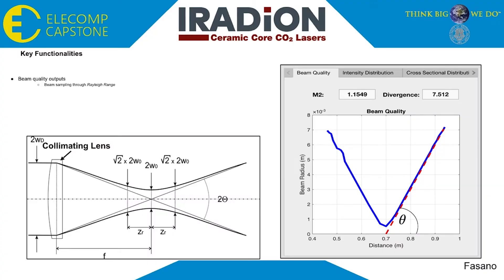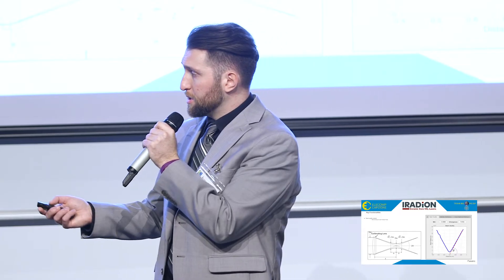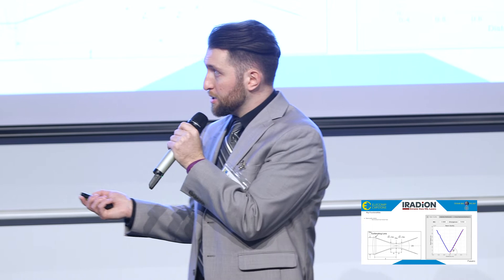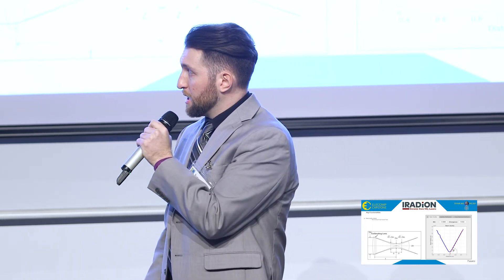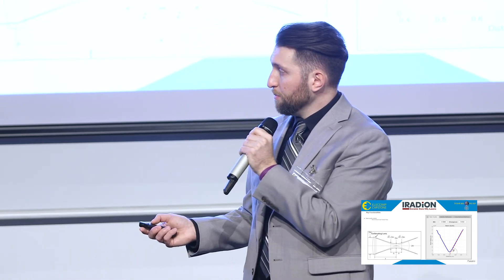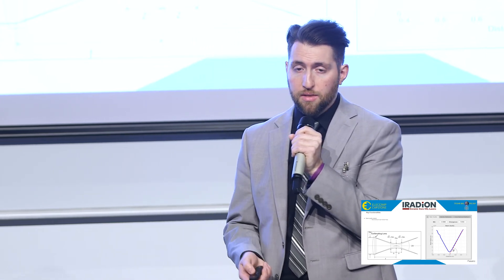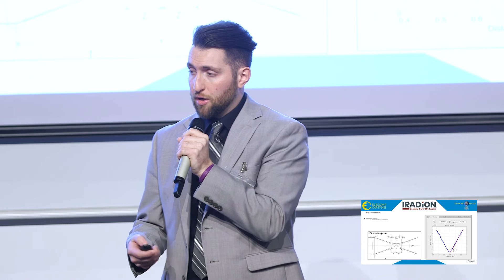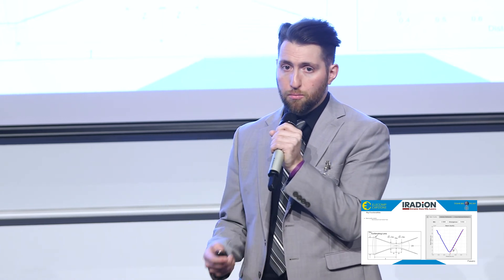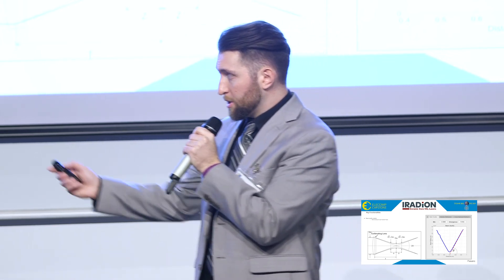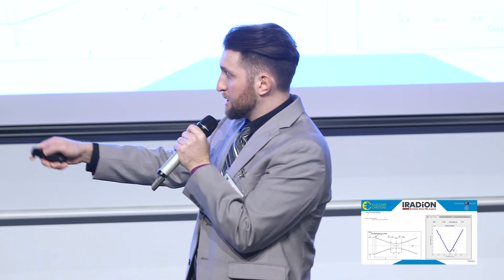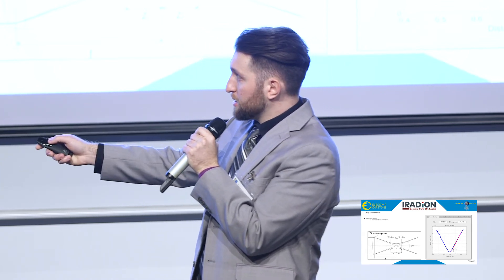The next feature we added was some critical information about the beam's quality. This was done by sampling the beam through what's known as the Rayleigh range. We used the four sigma Gaussian statistical method to calculate this range, and then we measured the beam radius within it. With this information, we were able to calculate and output the beam divergence angle as well as the M² value, which are pretty much the two most crucial beam quality parameters. The image on the left shows this general process, and the image on the right is the result. The values found here were within 5% of our target outputs.